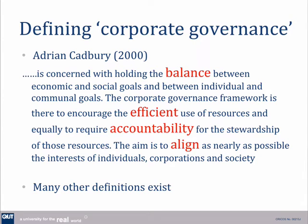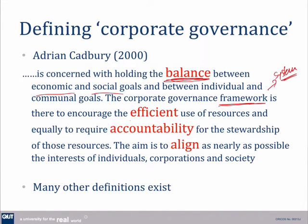Cadbury was a famous UK authority on governance. He starts to bring in different stakeholders by talking about the balance between economic and social goals. So, governance is about how we balance these goals between individuals and the community. The governance is the framework — that idea of it being a system — a framework to encourage an efficient use of resources and, really importantly, accountability.